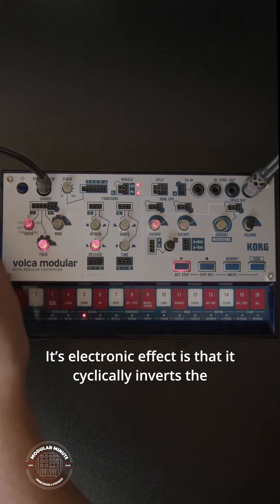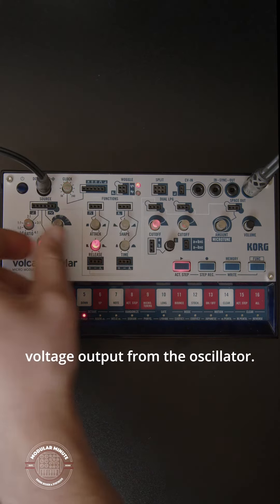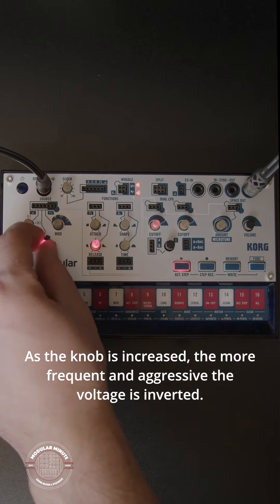Its electronic effect is that it cyclically inverts the voltage output from the oscillator. As the knob is increased, the more frequent and aggressive the voltage is inverted.